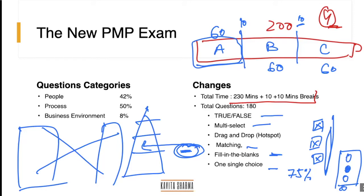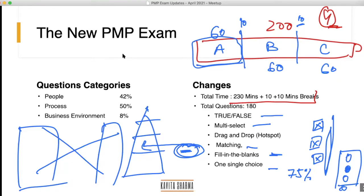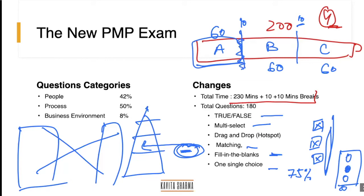A participant asked whether there is a specific time limit per section of 60 questions. Kavita explained: there is no fixed time per section — it is free flow. You choose when to submit each section and take your break. There are recommended strategies, but ultimately it is up to the individual.